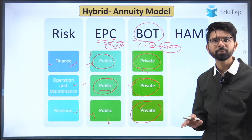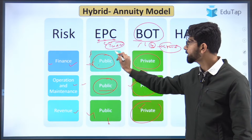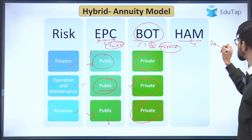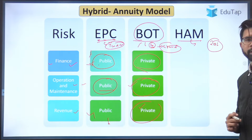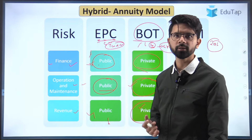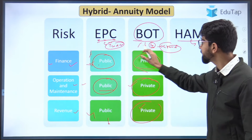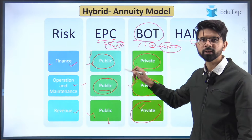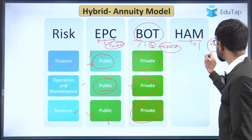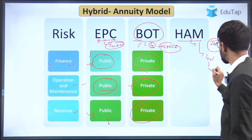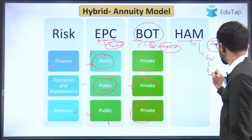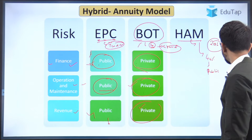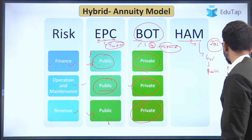Understanding the struggles of private sectors and the public entity in both these models, the government devised the hybrid annuity model. It was first proposed in 2006 — the brainchild of Union Minister Nitin Gadkari — to address the grievances present in both models and come up with a better one. In this model, 40% of the finance is given by the public entity and the remaining 60% is managed by the private entity.